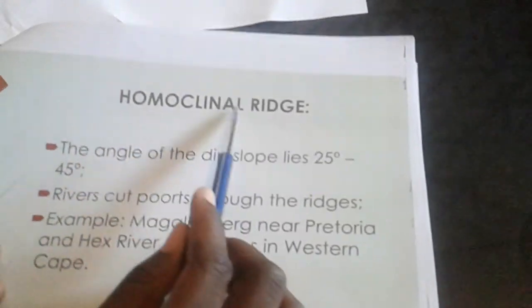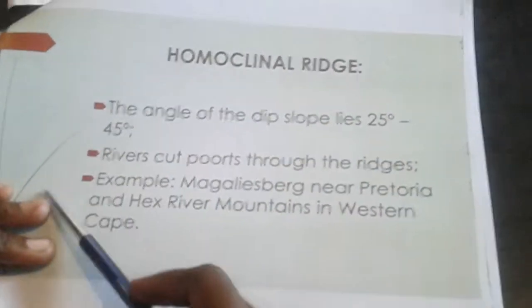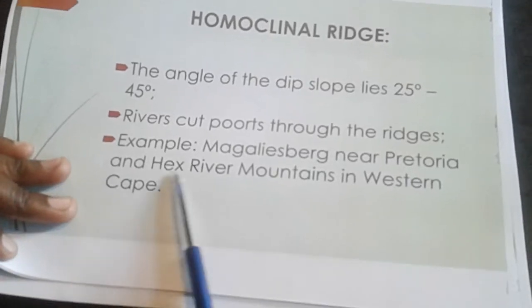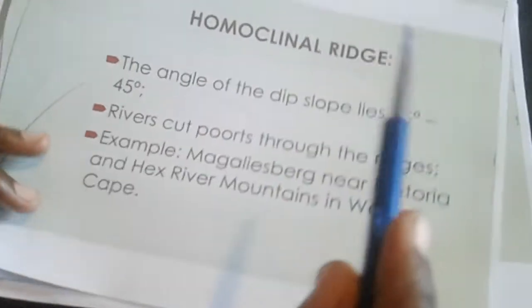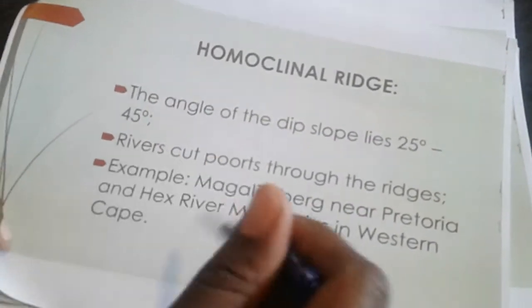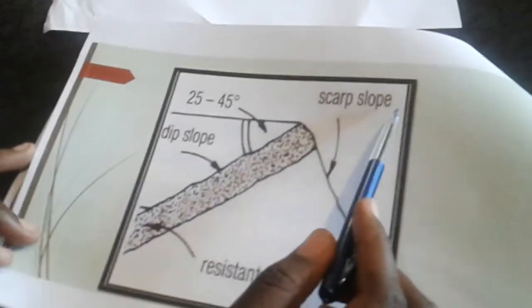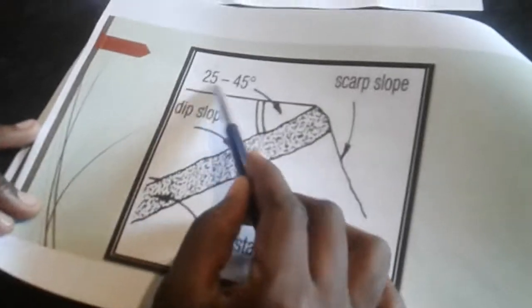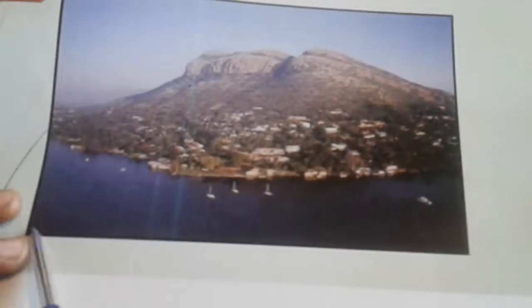The second type is the homoclinal ridge. In terms of the dip slope, it ranges from 25 to 45 degrees. An example would be the Hex River Mountains in the Western Cape. Rivers cut through gaps through these ridges. As you can see in the diagram, the dip slope ranges from 25 to 45 degrees, with the scarp slope on the other side.